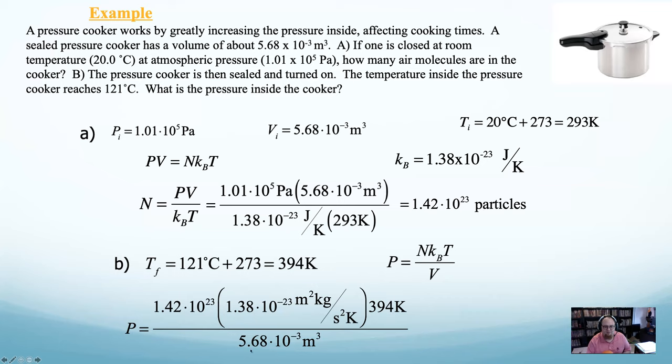Part B says the pressure cooker is sealed and turned on. Temperature reaches 121. What's the pressure? Well, we have a new temperature. 121 degrees Celsius is 394 Kelvin. Now I'll solve for pressure. If I want to solve for pressure, I'll divide both sides by the volume. The number of particles is sealed, it doesn't change. The volume, it's a hunk of metal, doesn't change. So I'll just plug in and I can solve. Went up by about a third.